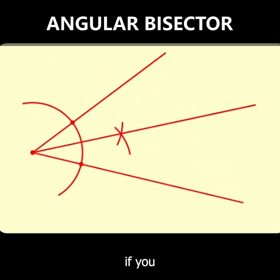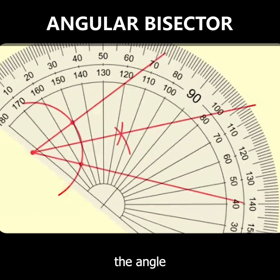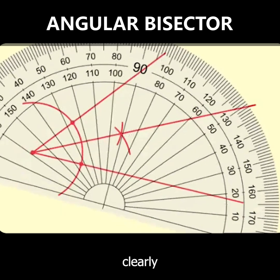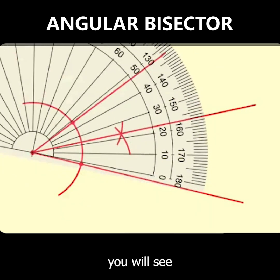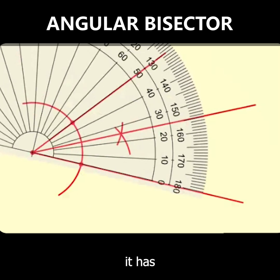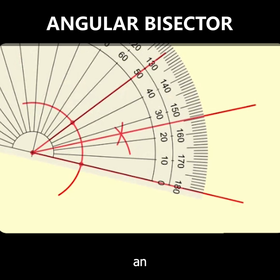You can clearly see that the angle has been bisected. If I measure out what the angle would be, you will see that it has been bisected — 50 and 25. This is how we construct an angular bisector.